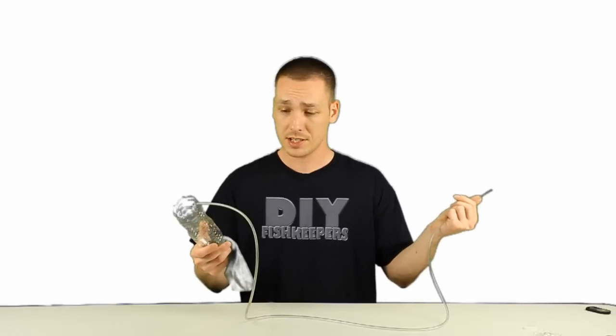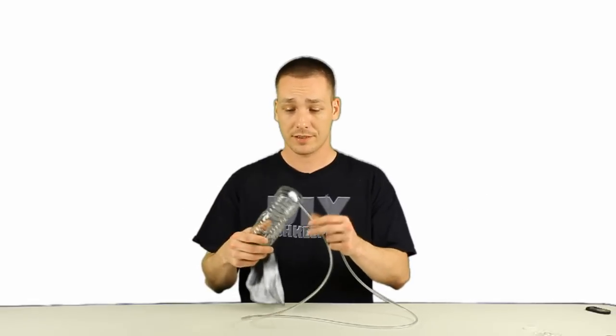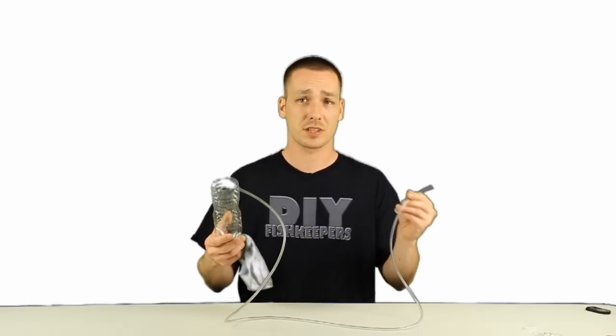Air line tubing is usually about $0.10 a foot. I'm using about 3 feet here, so $0.30, $0.25 for an air stone. So I mean, under $1 for all of this, under $2 for sure.